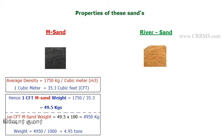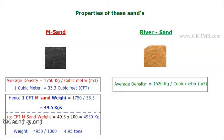For 100 cubic feet of M sand, we multiply by 100, which gives 4950 kg. Dividing by 1000 (since 1 ton = 1000 kg) gives us 4.95 tons. That's how we calculate the weight of 100 CFT of M sand.